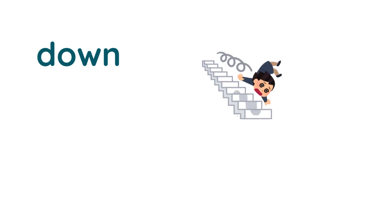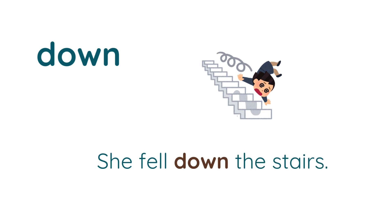Next is 'down'. Down is opposite to up. Down means keelee — downward. For example: She fell down the stairs — keelee is down.